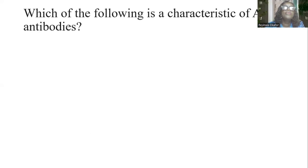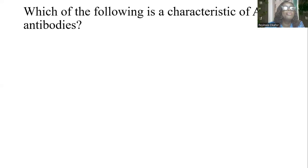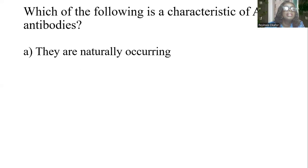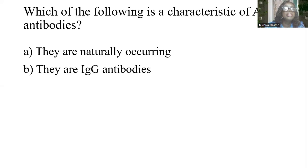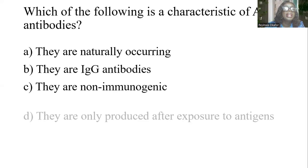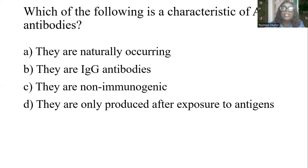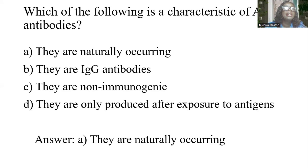Which of the following is a characteristic of ABO antibodies? A) They are naturally occurring. B) They are IgG antibodies. C) They are non-immunogenic. D) They are only produced after exposure to antigens. The answer is A: they are naturally occurring antibodies.